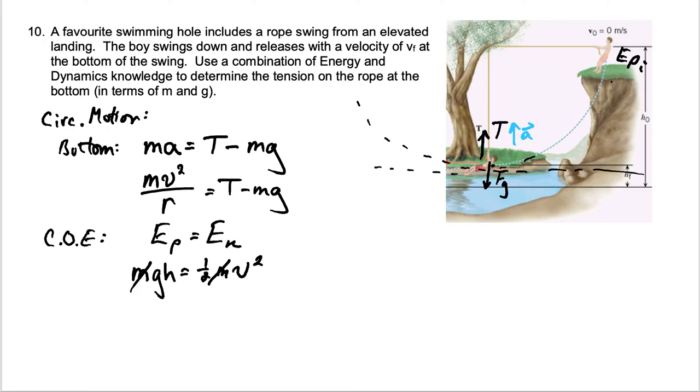Now h is the distance from here to here, which is the same thing as the length of the rope. And why don't we just call that r? That's the radius of the rope. So really, h is the same thing as r.